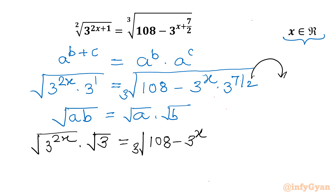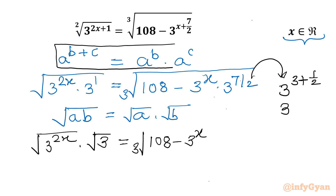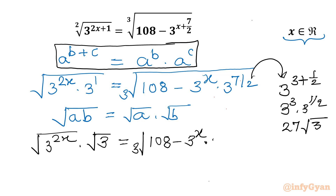Now, 3 power 7 by 2 we can write as 3 power 3 plus half. Using the same property a power b plus c equals a power b times a power c, it becomes 3 cubed times 3 power 1 by 2. Since 3 cubed is 27 and 3 power 1 by 2 is root 3, I can write this as 27 root 3 inside the cube root.